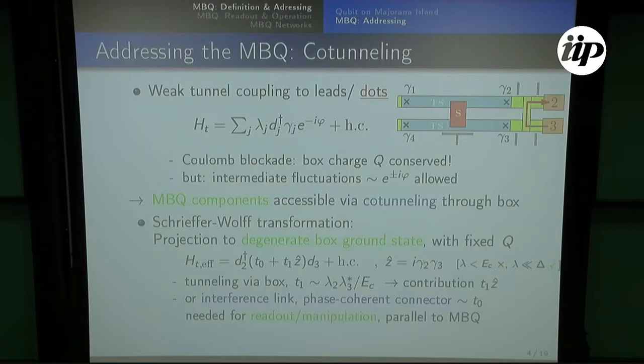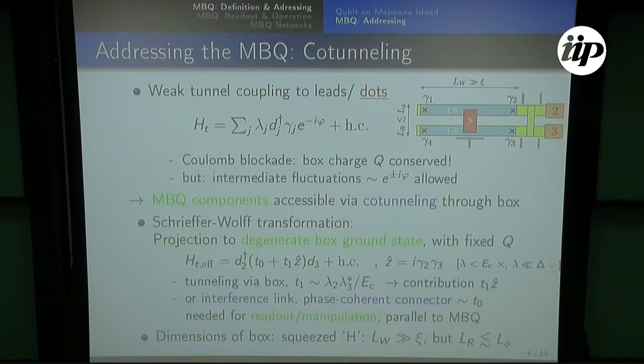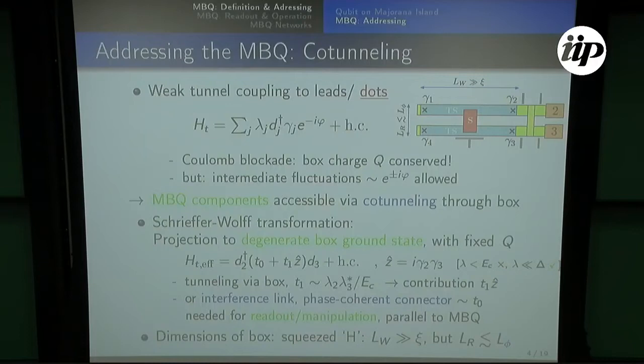The more important approximation is that these tunneling rates, temperature, and everything must be much smaller than the effective gap of the system delta, because otherwise one excites quasi-particles. The last thing I want to mention is what this device actually looks like. It should be quite a kind of 'squeezed H': the wire should be much longer than the coherence length of the Majorana so you have really zero energy states, while the vertical direction should be small enough such that you can have coherent transport through this link.